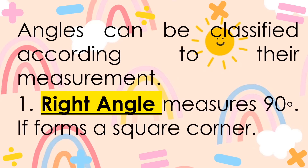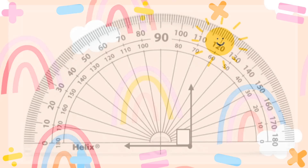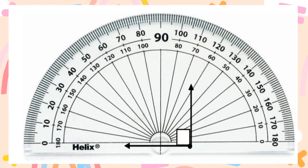Let's have the classification or types of angles. Angles can be classified according to their measurement. A right angle measures 90 degrees and it forms a square corner. When we say right angle, it measures exactly 90 degrees. You can see the 90 degrees in the middle and the straight line below — that is a right angle.